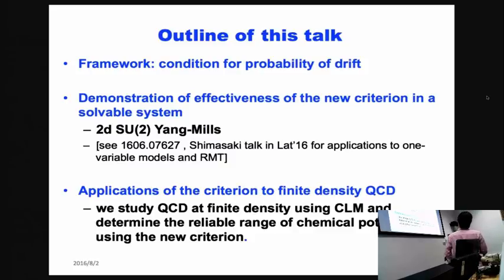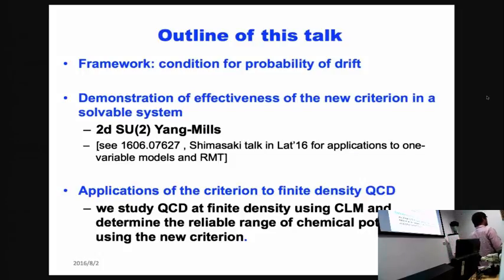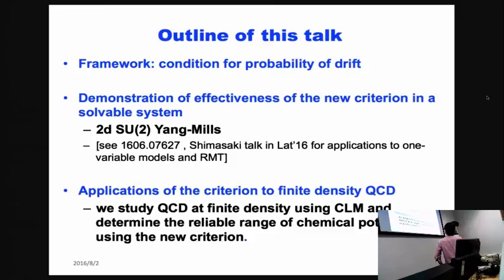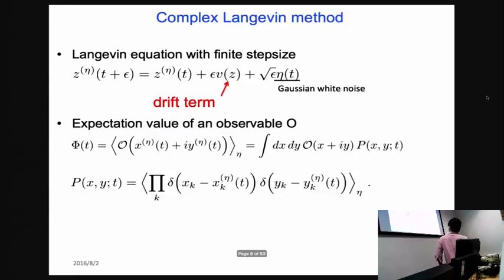The outline is: first I will explain the essence of our discussion and why the drift terms become so important; then I will apply the criterion to the two-dimensional SU(2) gauge theory; and finally I will show some preliminary results for QCD at finite density.